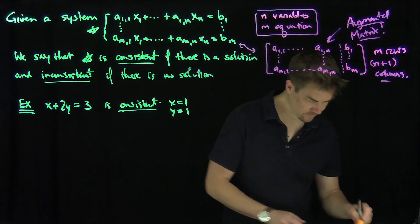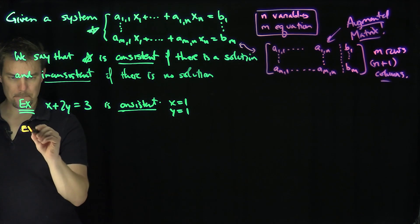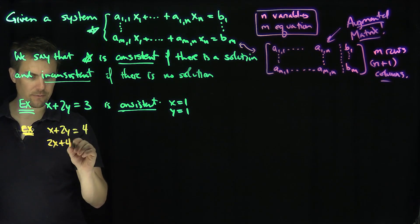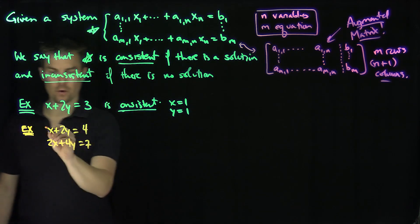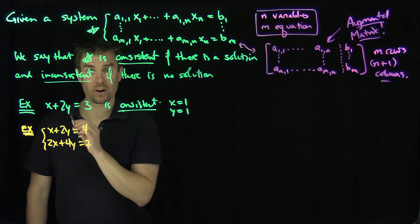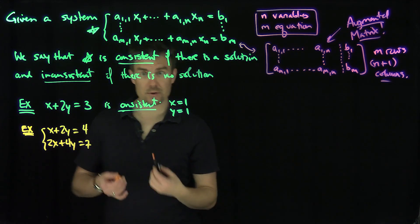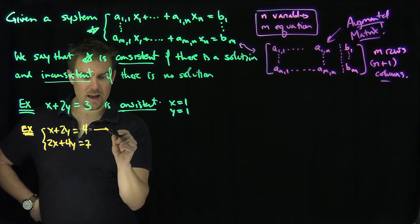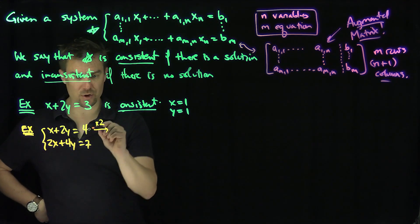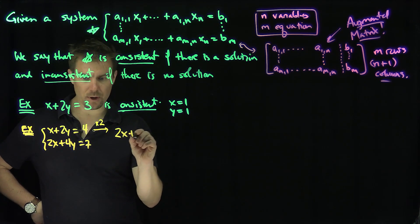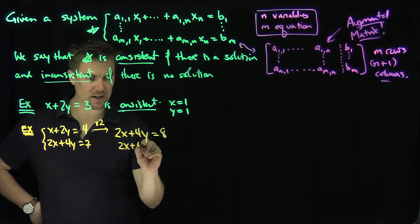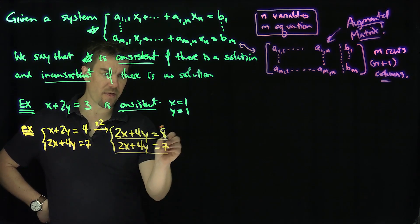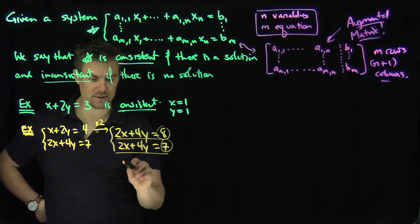Now an inconsistent example: 2x plus y equals four, and 2x plus 4y equals seven. We have two equations and two variables. If I multiply the top equation by two, I get 2x plus 4y equals eight, but the bottom equation says 2x plus 4y equals seven. If both equations are true simultaneously, that says eight equals seven — that's impossible. So this is an inconsistent system.